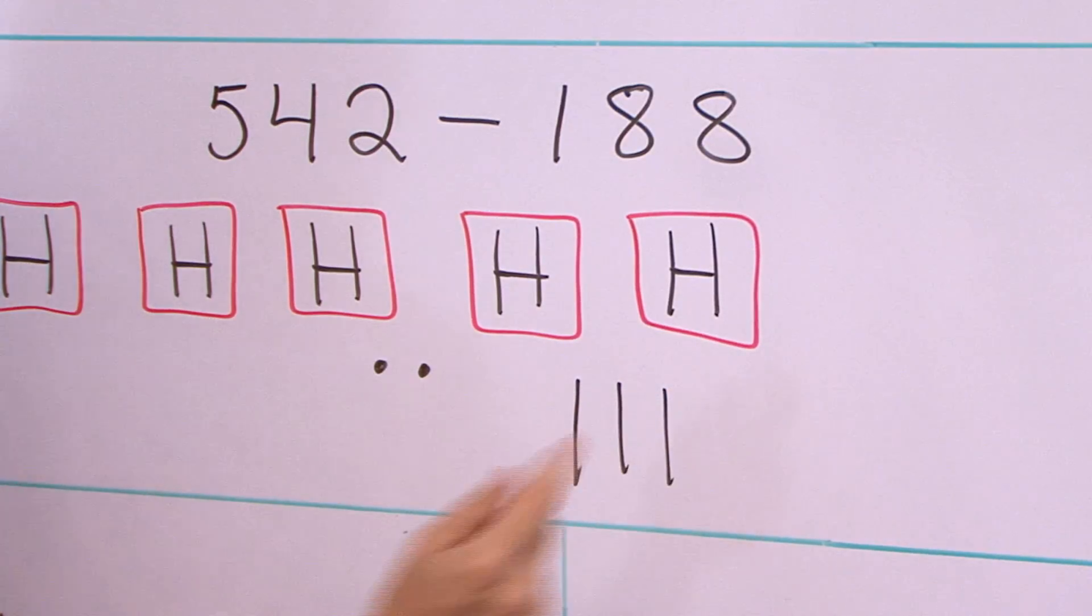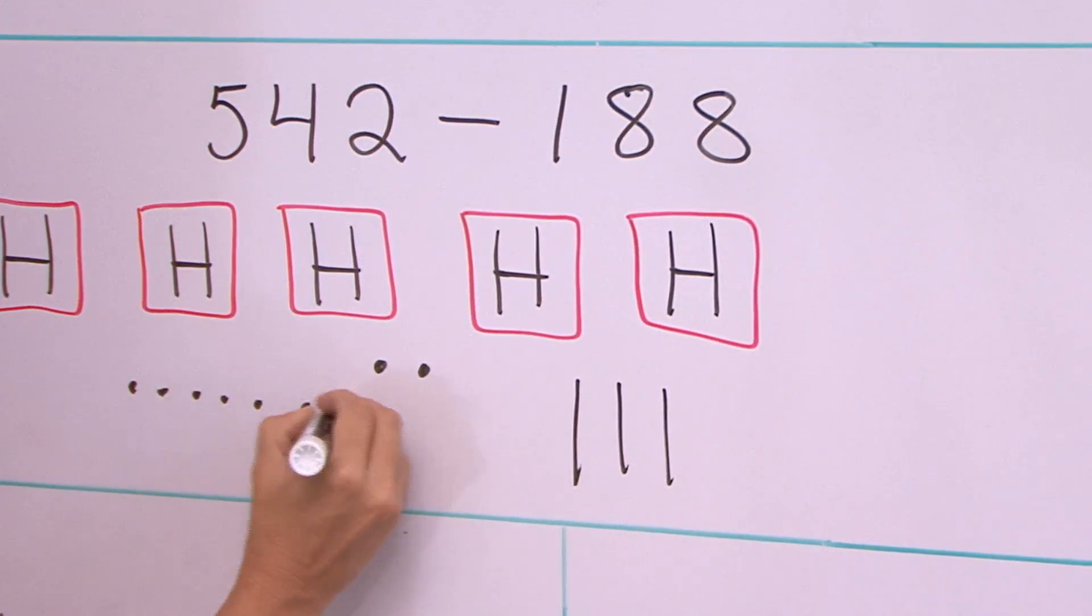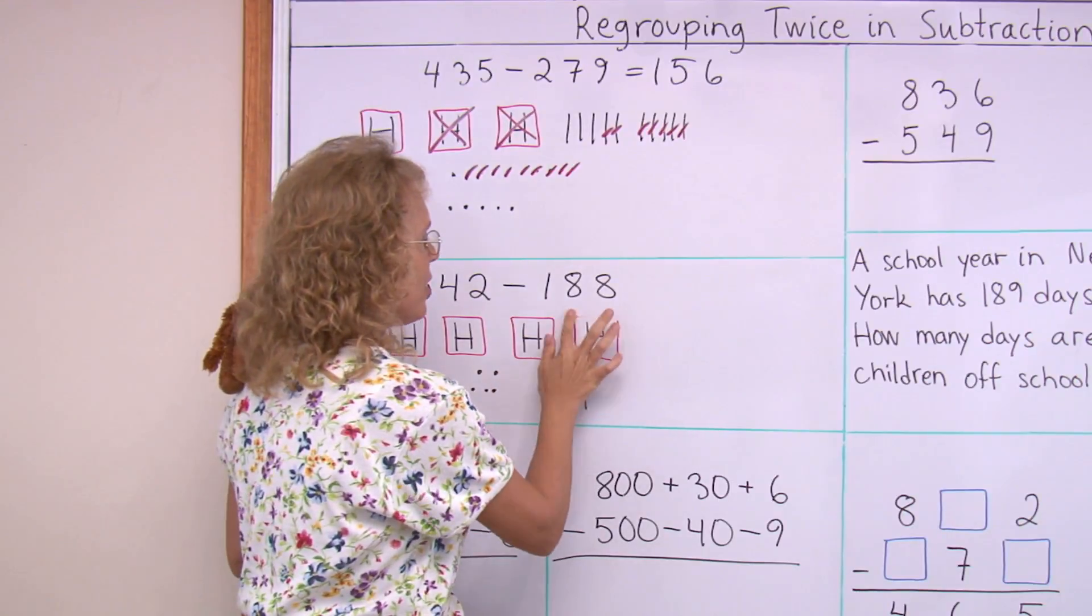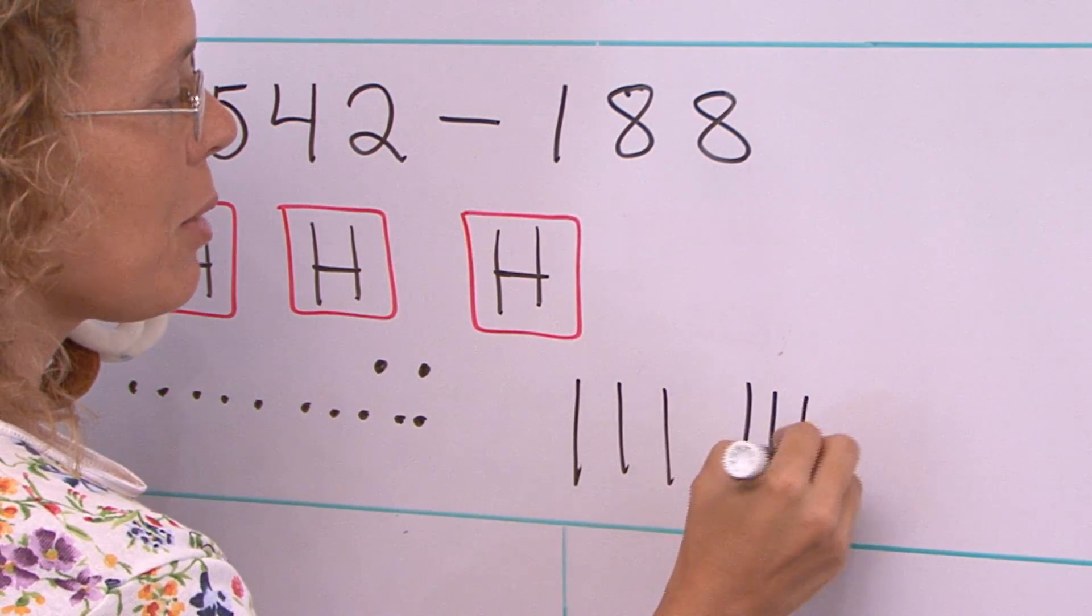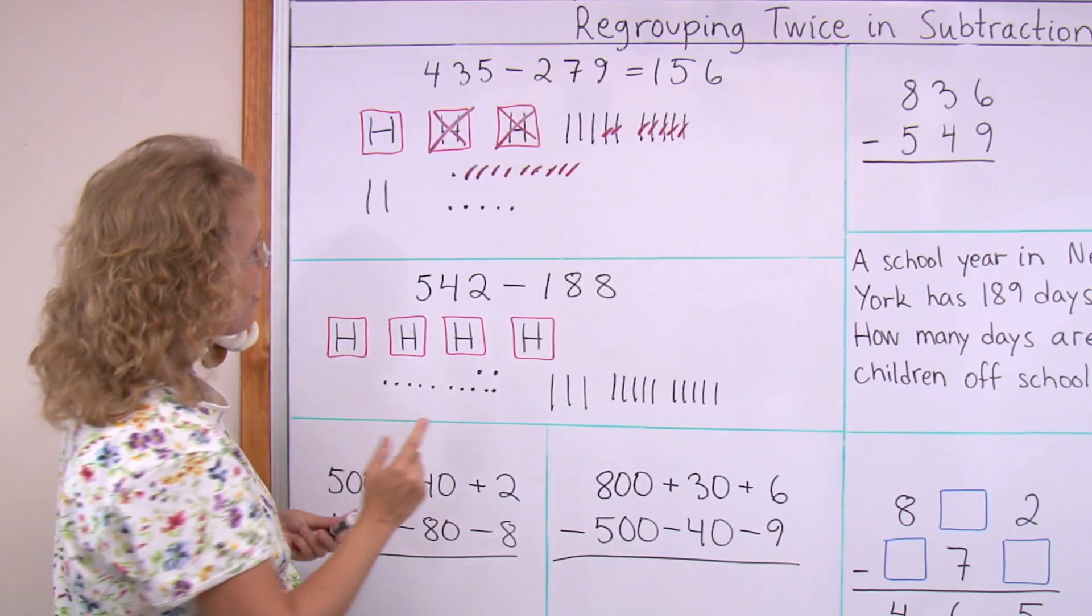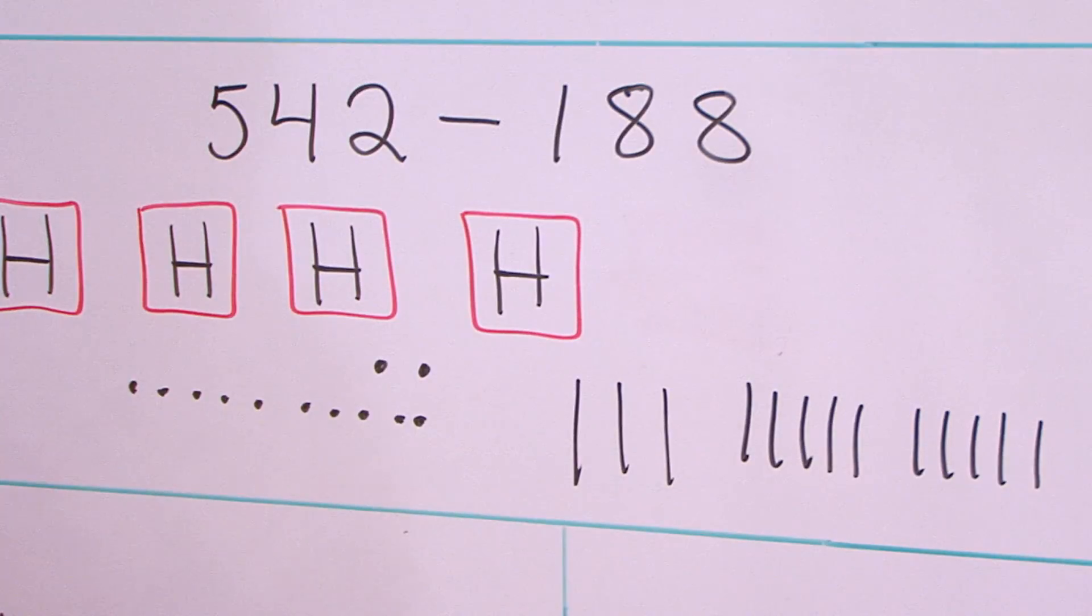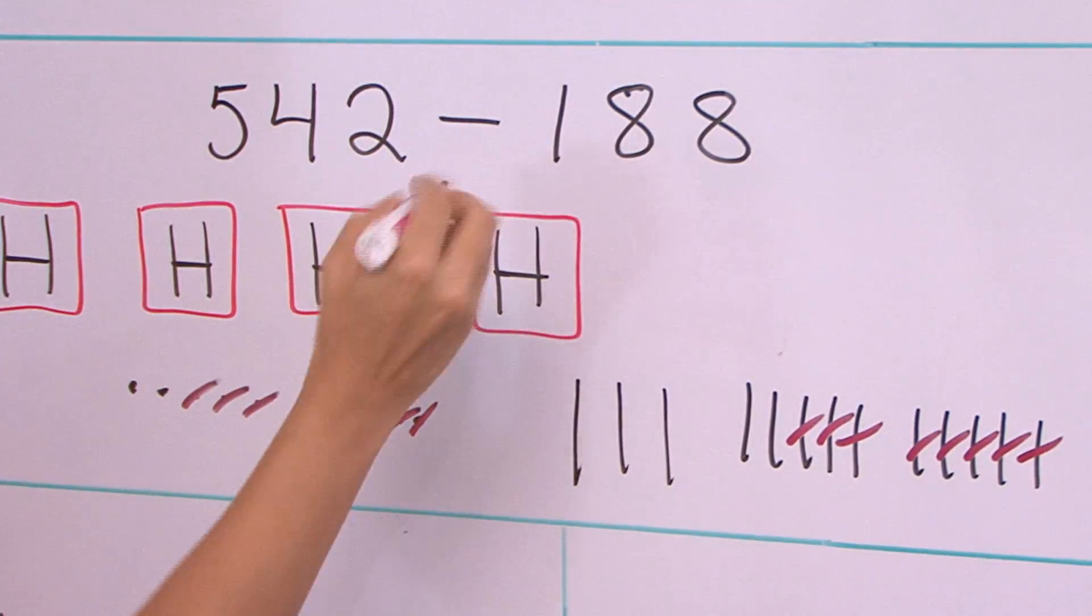First take a ten, break it down so it becomes ten ones. Also take a hundred and in its place will be ten tens. Now I can subtract everything, I can subtract eight ones and eight tens and one hundred.